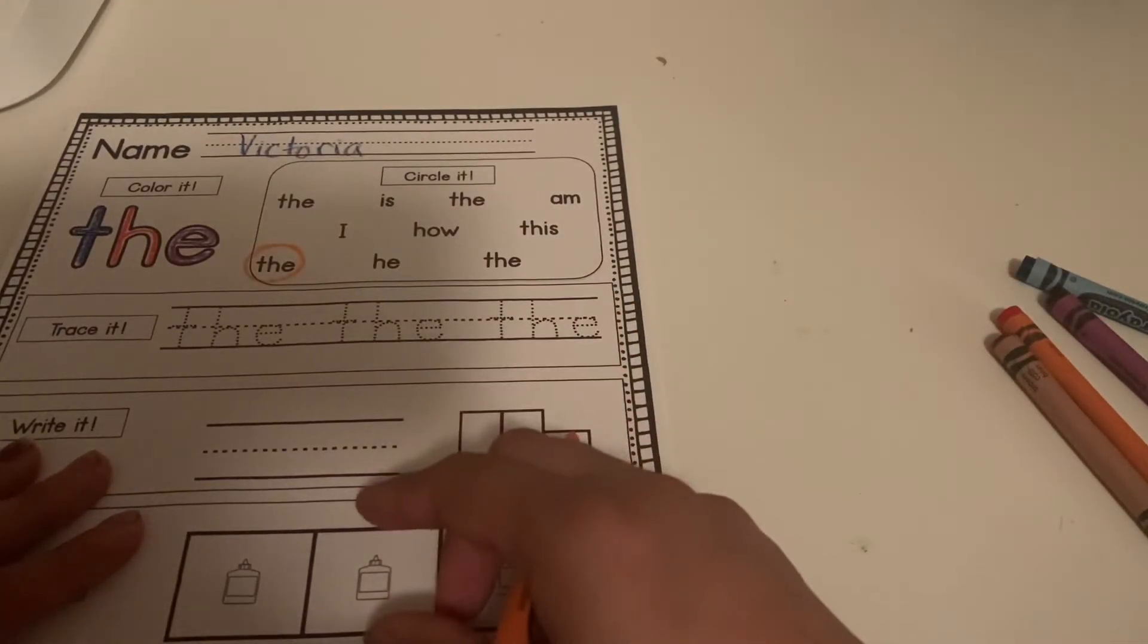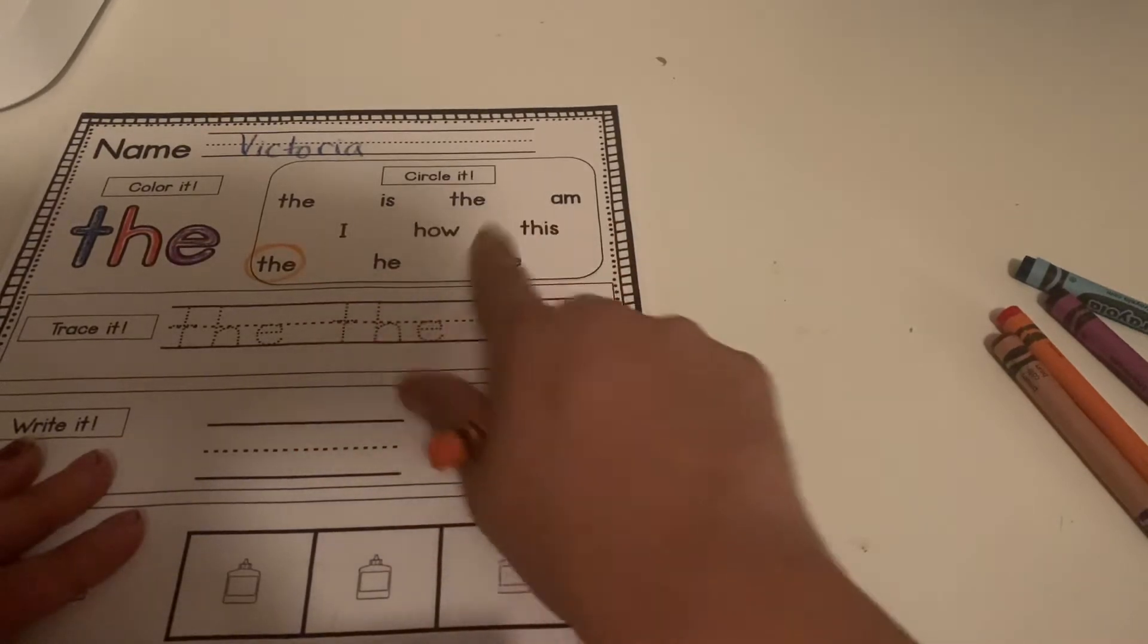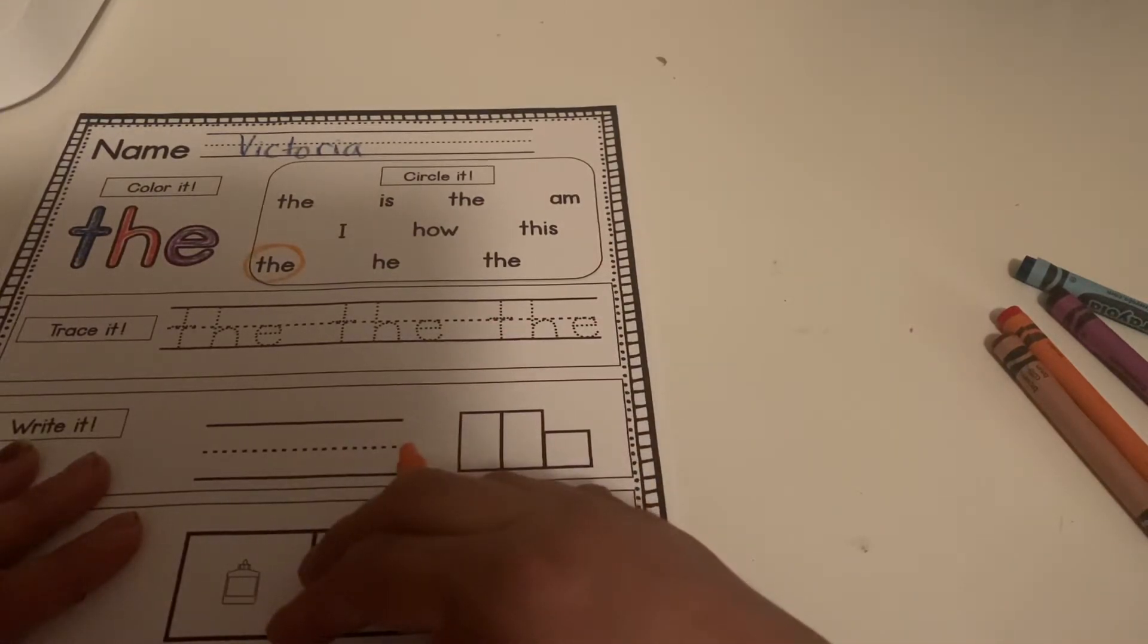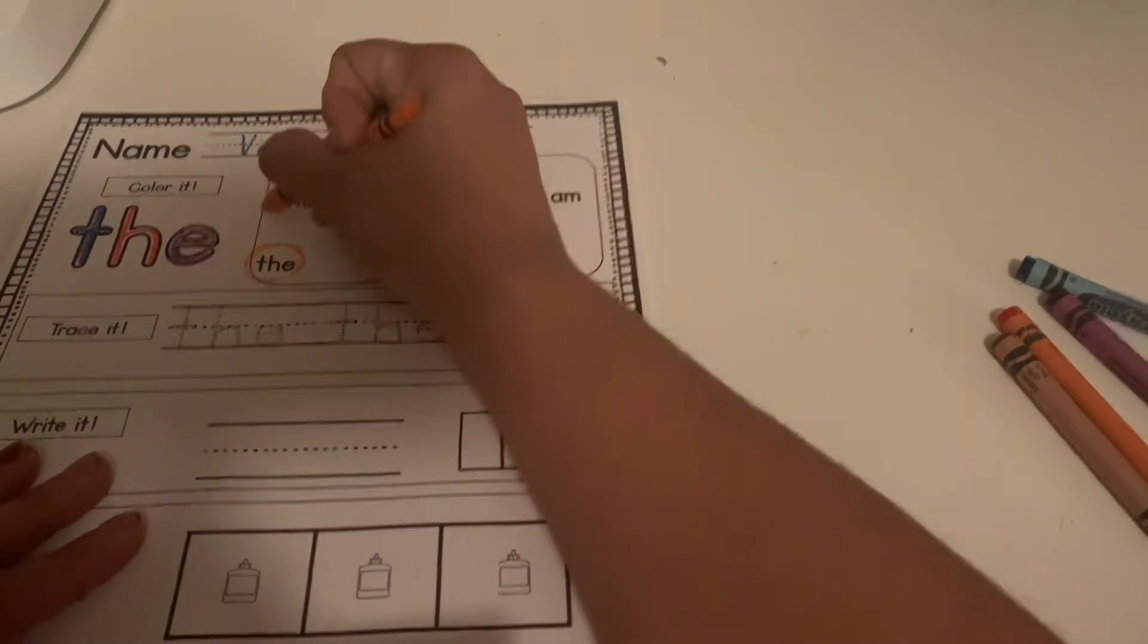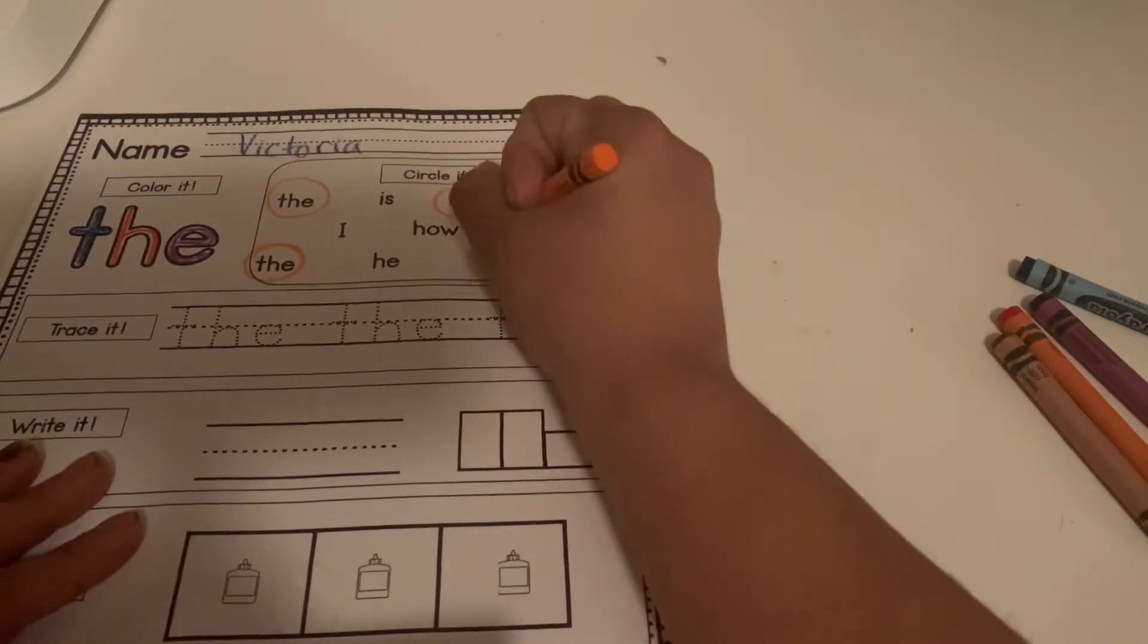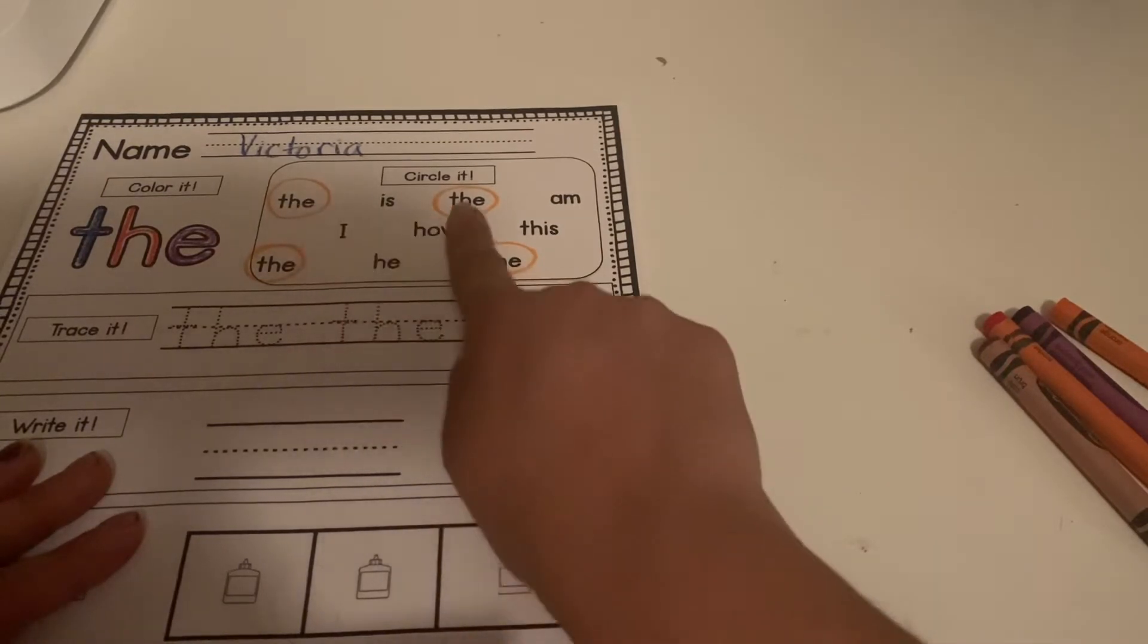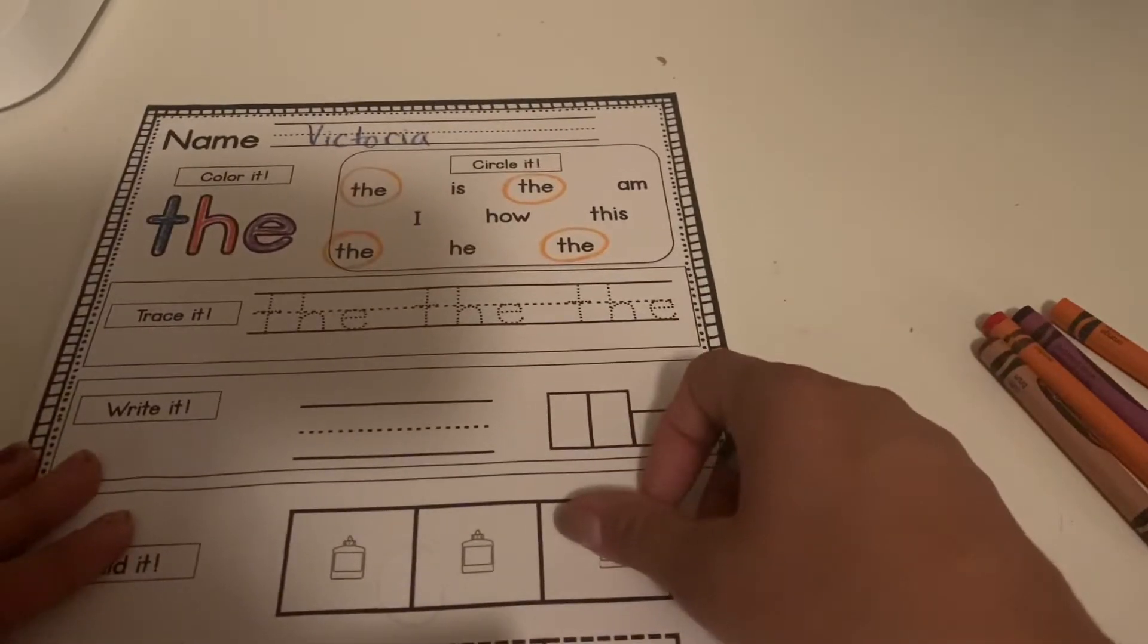And then I want you guys to go ahead, pause the video and finish circling the word 'the.' When you come back, I will show you how many we have. Okay friends, welcome back. So let's see how many words 'the' were on our page. You guys should have circled one, two, three, four 'the's. All right, good job.